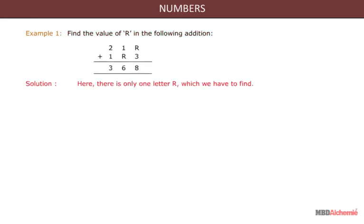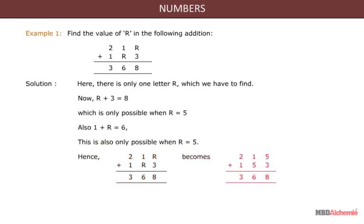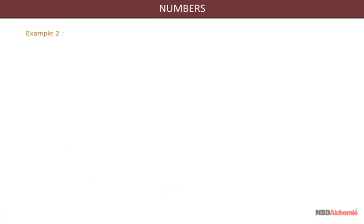Consider the following example: find the value of r in the given addition. There is only the letter r whose value we need to find. Taking r plus 3 equals 8, which is only possible when r equals 5. Also 1 plus r equals 6, which is only possible when r equals 5. Hence 21r plus 1r3 becomes 215 plus 153 equals 368.